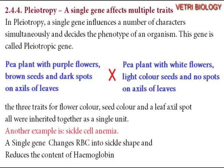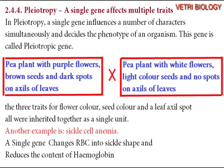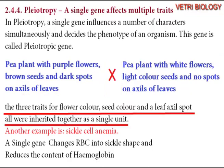The next example of intragenic interaction is pleiotropy. In pleiotropy, a single gene influences a number of characters simultaneously and decides the phenotype of the organism. One single gene controls multiple characters of the organism. This gene is called a pleiotropic gene. When a pea plant with purple flowers, brown seeds, and a dark spot on the axils of leaves was crossed with a pea plant having white flowers, light-colored seeds, and no spot on the axils of leaves,